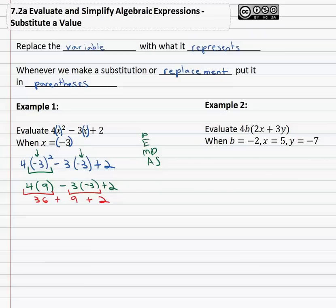Finally, we can add and subtract from left to right. Positive 36 plus 9 is 45, plus 2 is 47. We have now evaluated the expression when x is equal to negative 3.